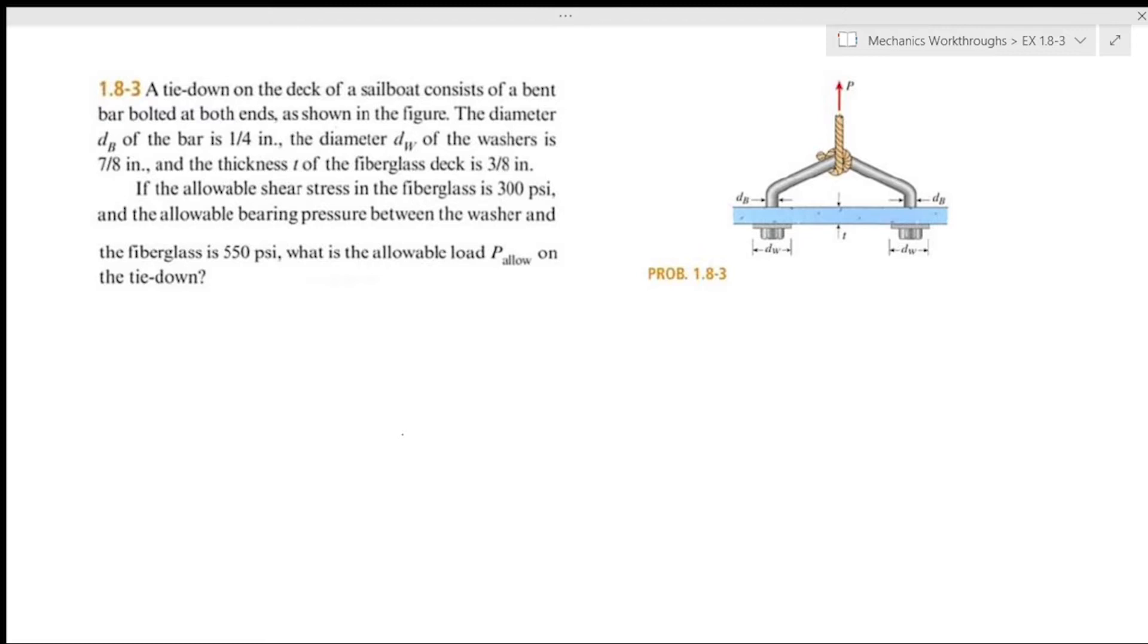We're trying to find the maximum force P that we can have on the rope that is tied to this bar. This bar is bent and goes through the fiberglass and has a washer on the other side. This is important when we're talking about the allowable shear stress. That shear stress acts on the surface of the cylinder going through the fiberglass.